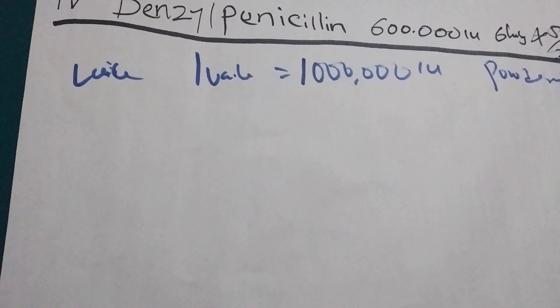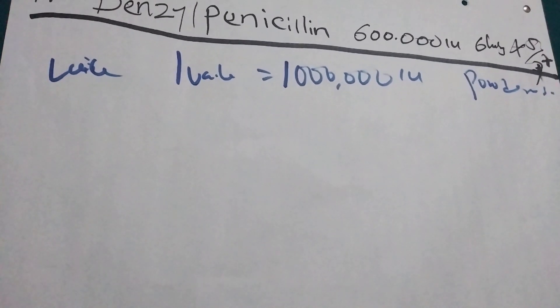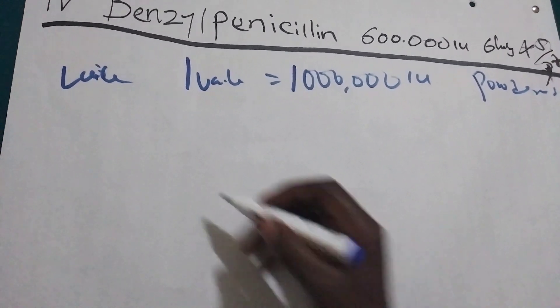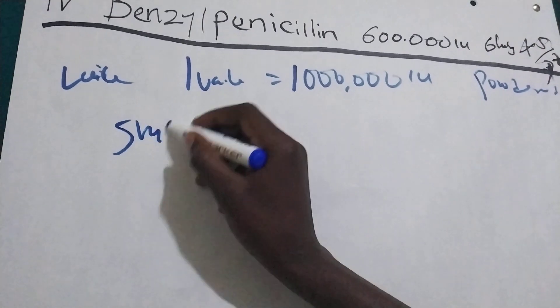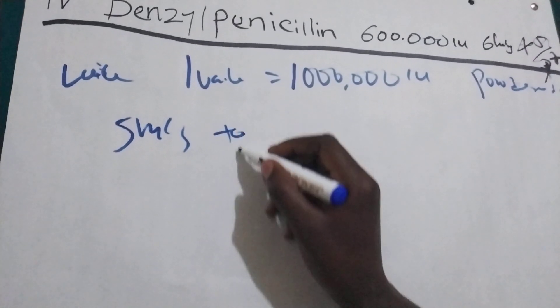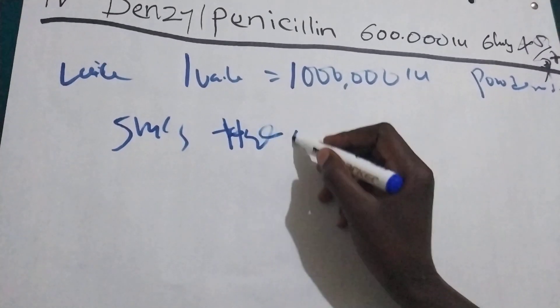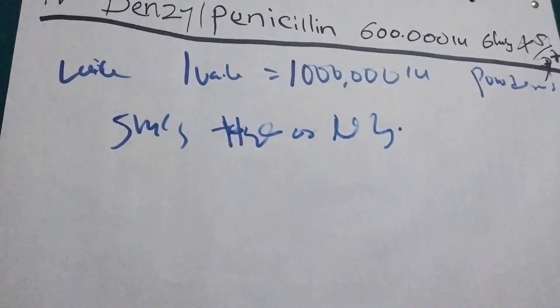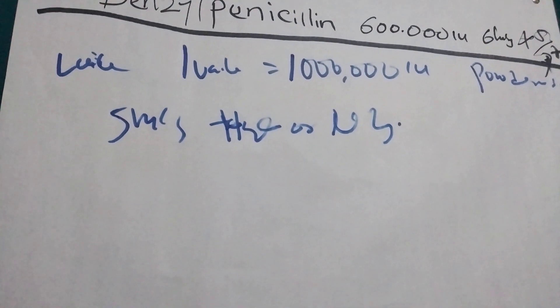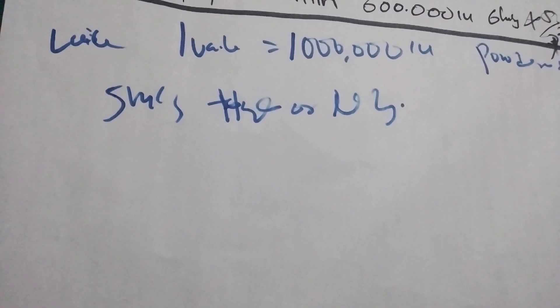So we are going to use five mils to dilute this drug. Five mils of water for injection or normal saline to dilute this drug. Now we have already diluted the drug. The drug is here.